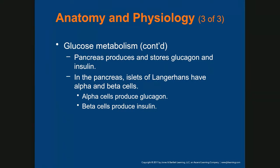When the blood sugar is low, glucagon will be produced. When glucagon is produced by the alpha cells, it converts glycogen that is stored in the liver to glucose. The beta cells produce insulin.